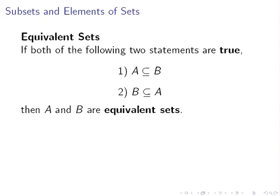Now equivalent sets: if both of the following statements are true—A is a subset of B and B is a subset of A—then the sets A and B are equivalent sets. That means A and B are identical to one another.